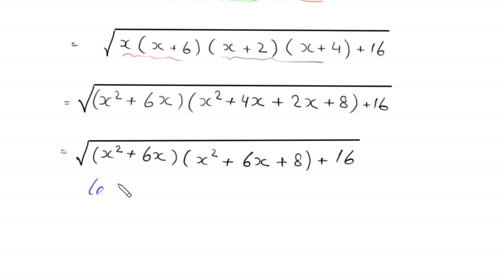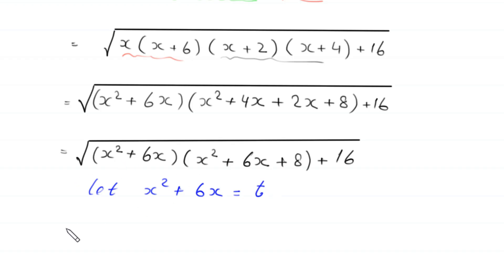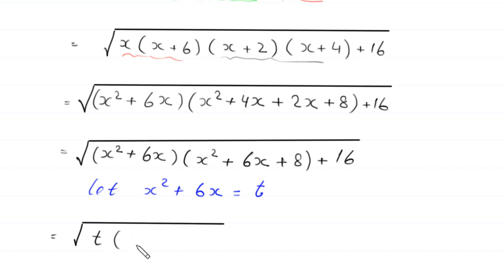We suppose that x²+6x is equal to t. So this expression becomes square root of t(t+8) plus 16.